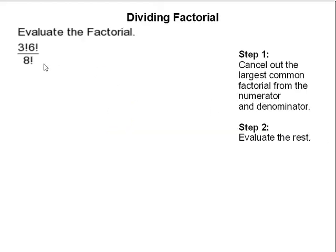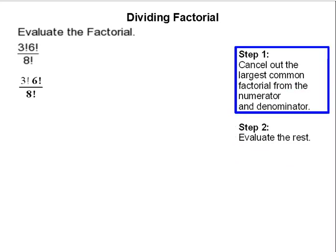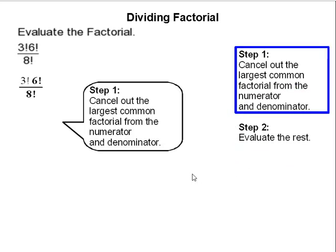In this problem, we are going to divide factorials. Step 1: cancel out the largest common factorial from the numerator and the denominator.